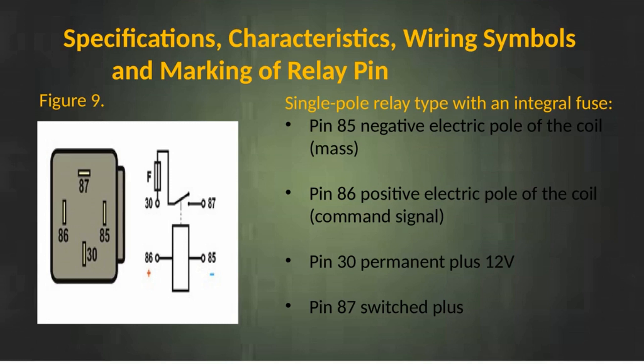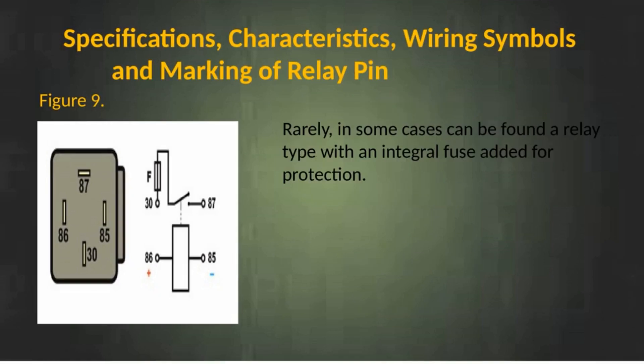Single pole relay type with an integral fuse. Pin 85 — negative electric pole of the coil; Pin 86 — positive electric pole of the coil; Pin 30 — permanent plus 12 volts; Pin 87 — switched plus. Rarely, in some cases a relay type with an integral fuse can be found, added for protection.